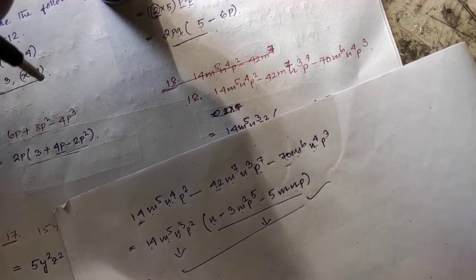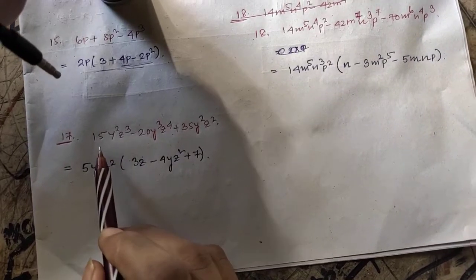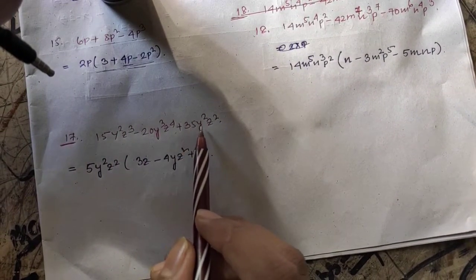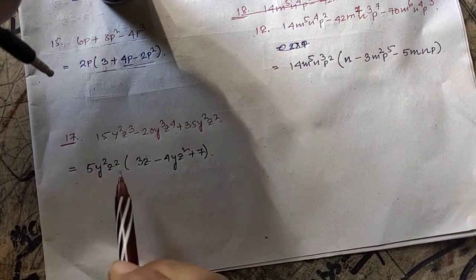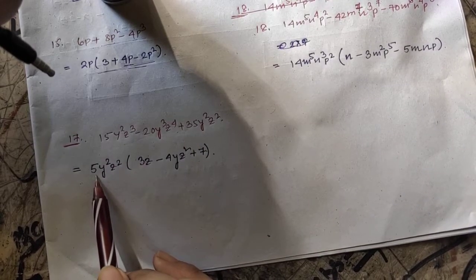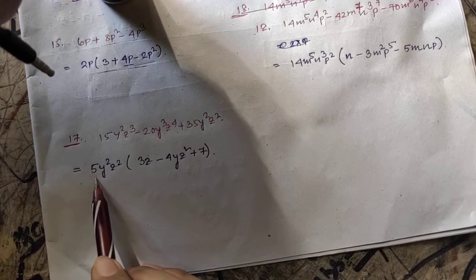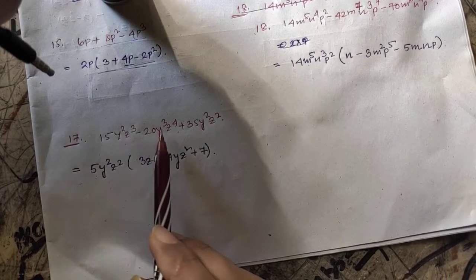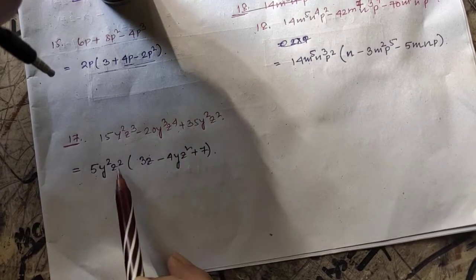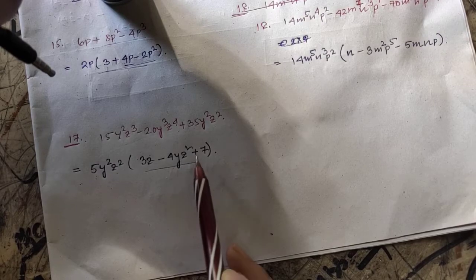Question 17: 15y²z³ − 20y³z⁴ − 35y²z². The common numerical factor of 15, 20, and 35 is 5. For the literal part: y², y³, y² — take y²; z³, z⁴, z² — take the lowest, z². So take 5y²z² as common. Inside the bracket we get (3z − 4yz² + 7).